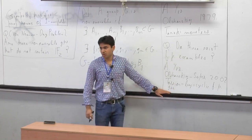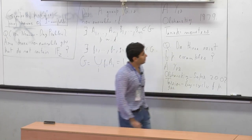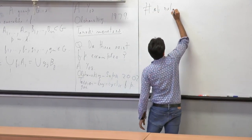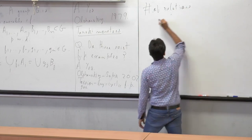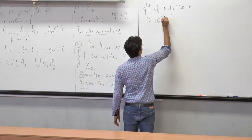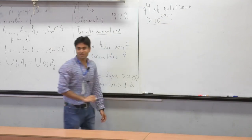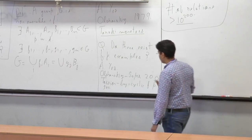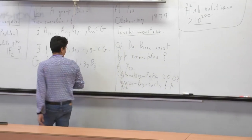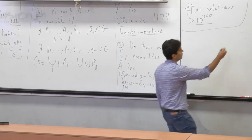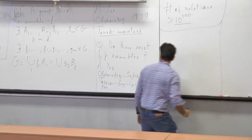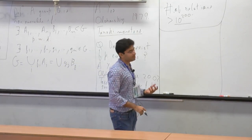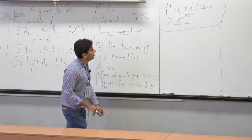The construction is quite difficult — it's 110 pages long. Sapir estimates that the number of relations in this presentation is more than 10 to the power 200, which is more than the number of atoms in the universe. So it's a very unwieldy presentation, even though the construction is a great achievement. People were still hunting for examples which are more down to earth, and some examples were constructed recently.